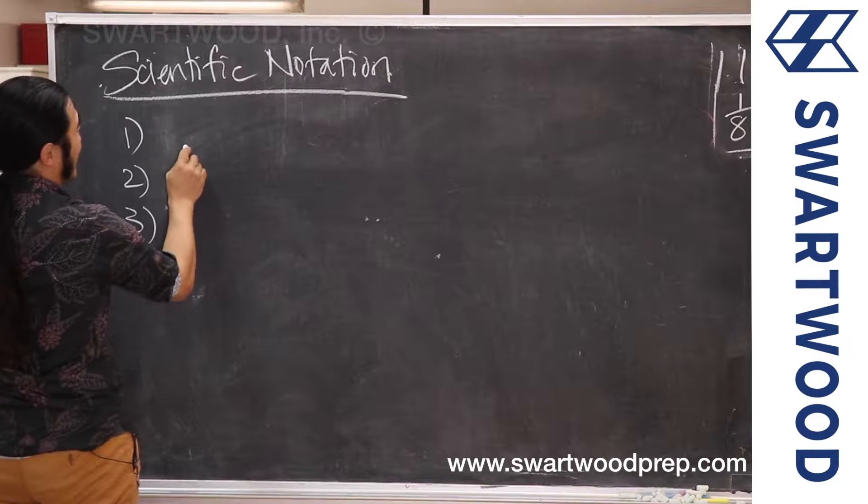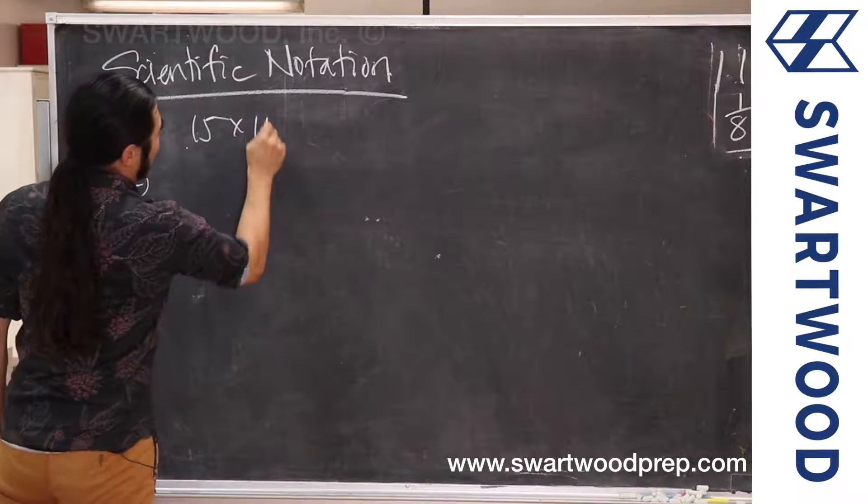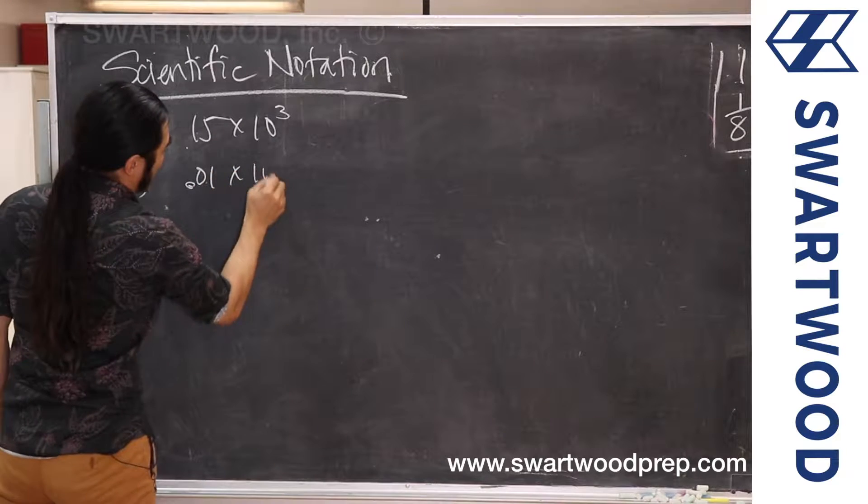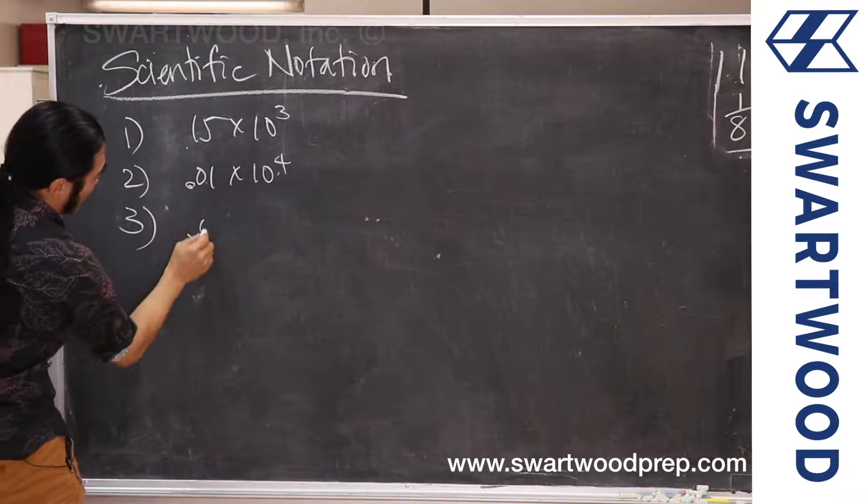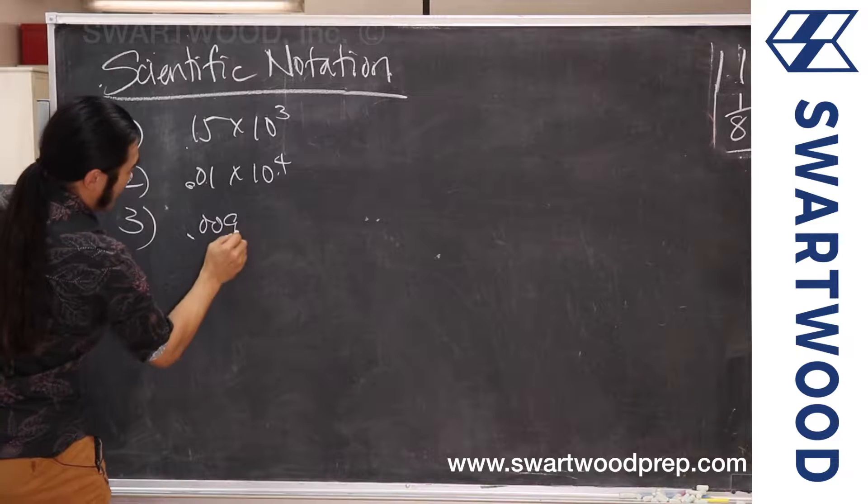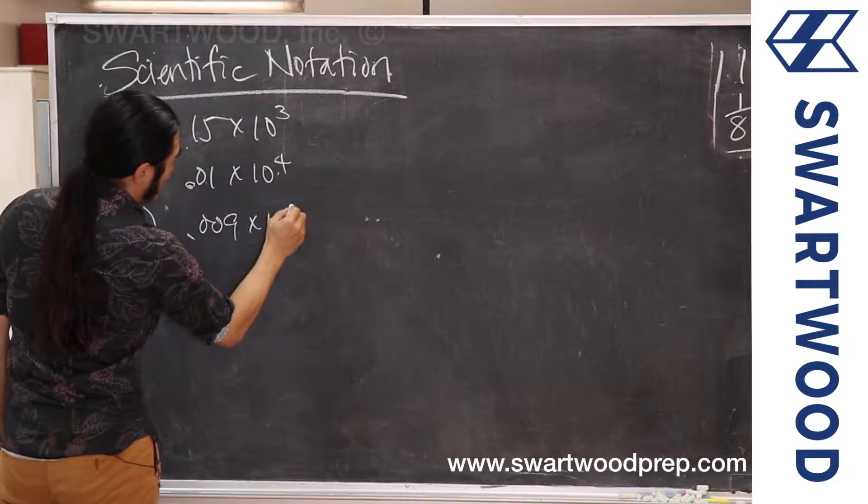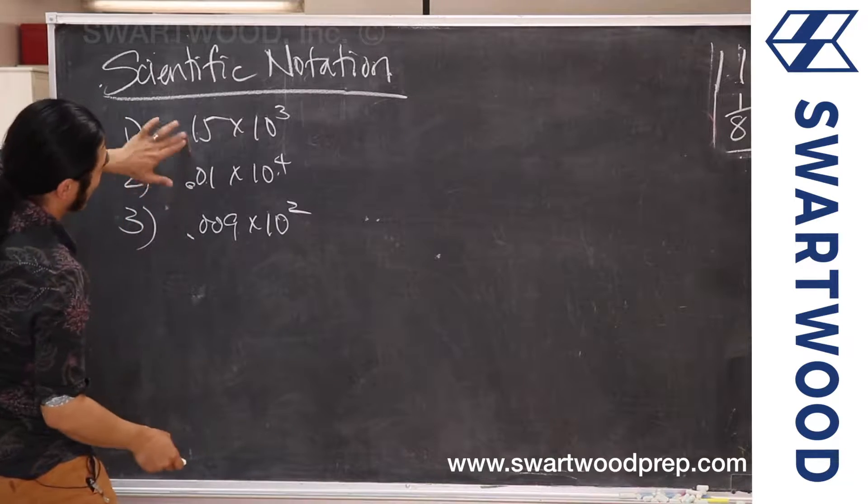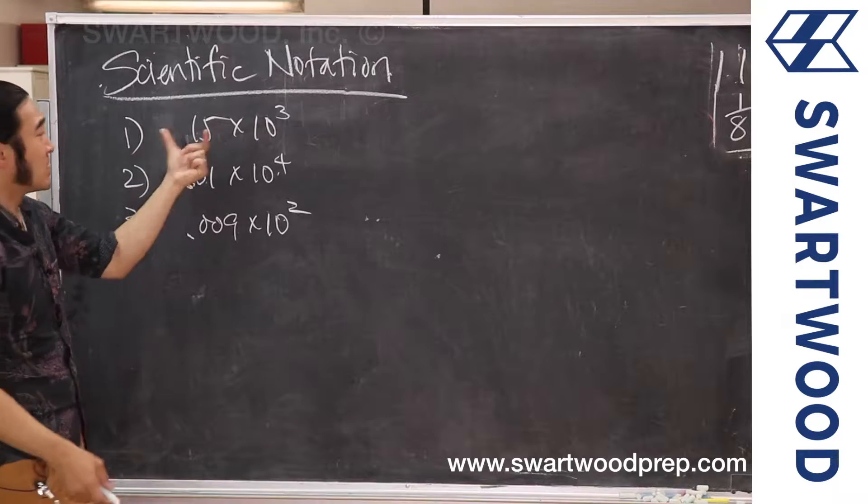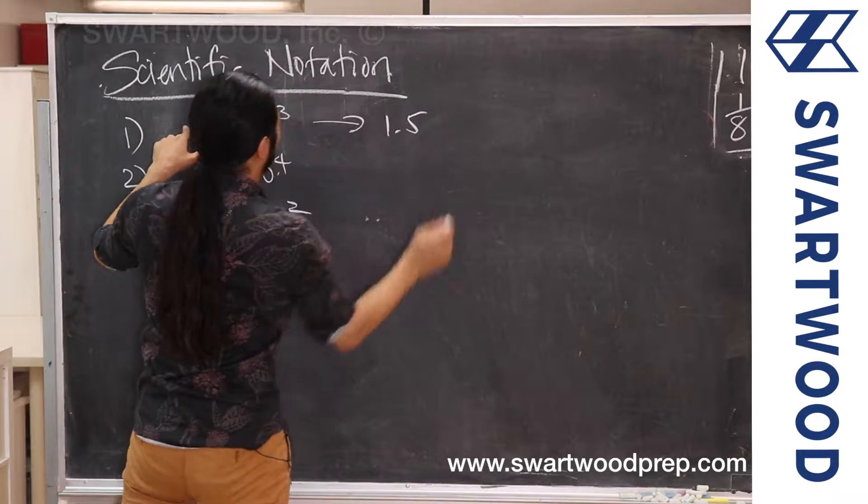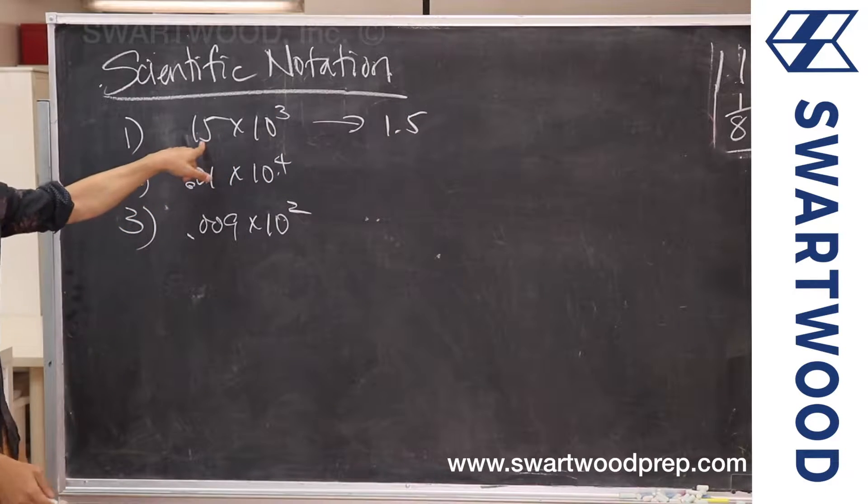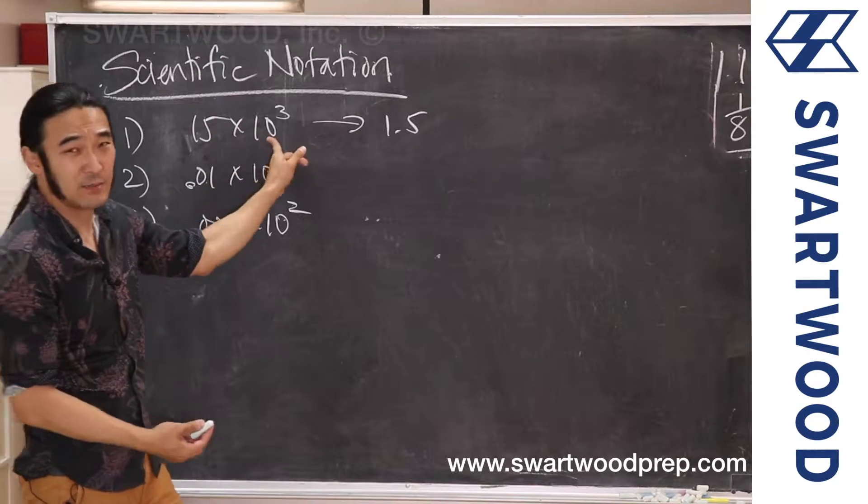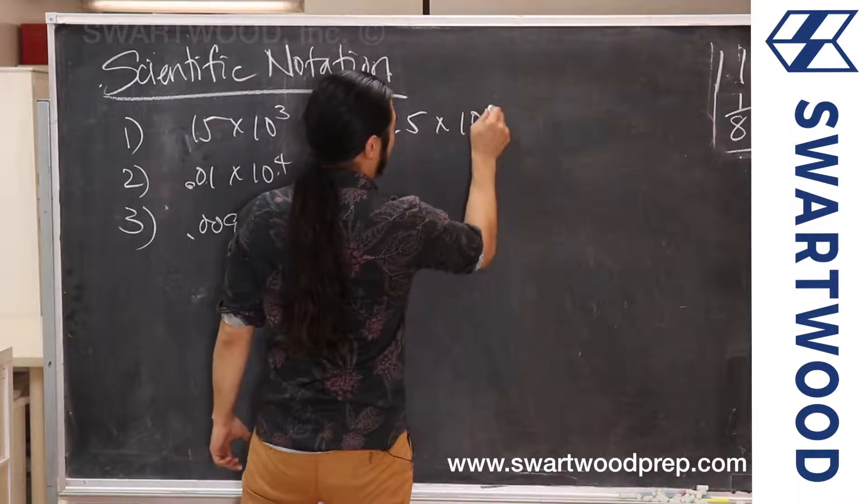But if we took something like 15 times 10³, the whole goal is to get this guy between 1 and 9, right? So we'll transform this to 1.5. We're making this guy basically smaller, so our power of 10 needs to be smaller. So we need to compensate—we need to make this guy 10 times as big, so that would be 10⁴.